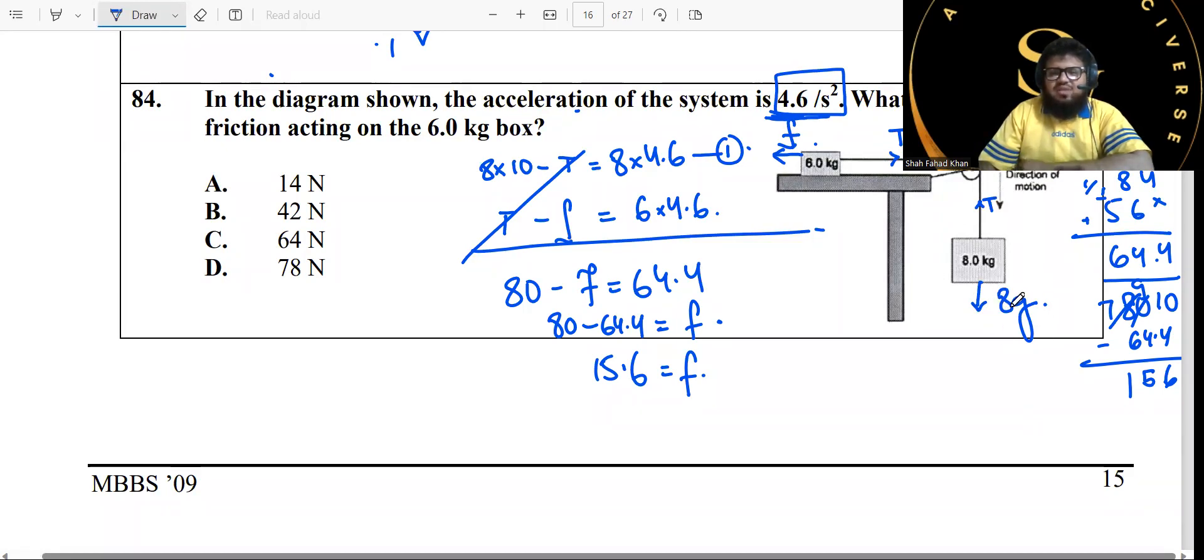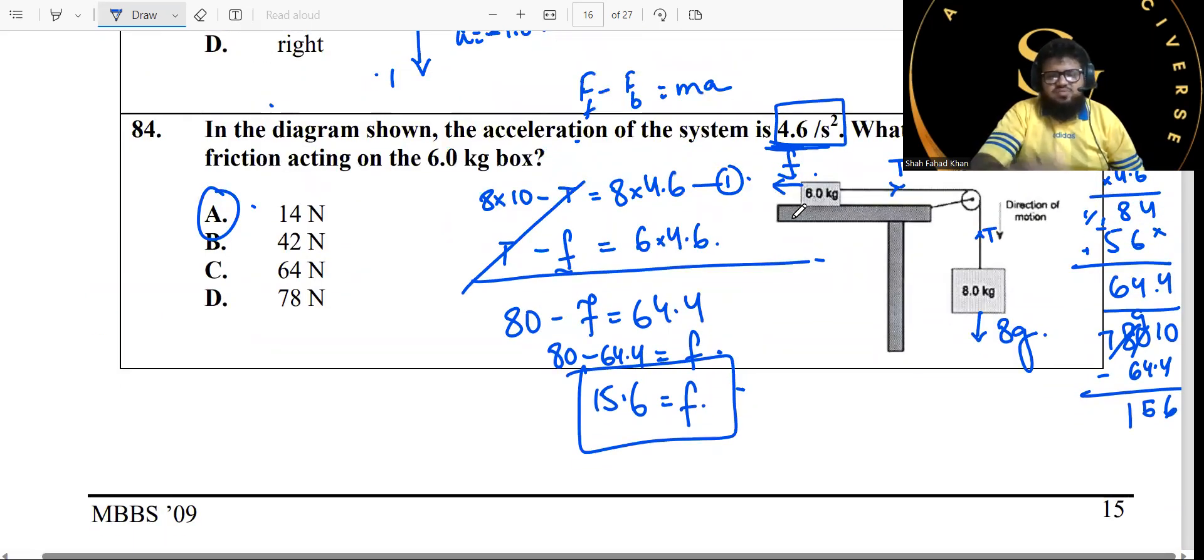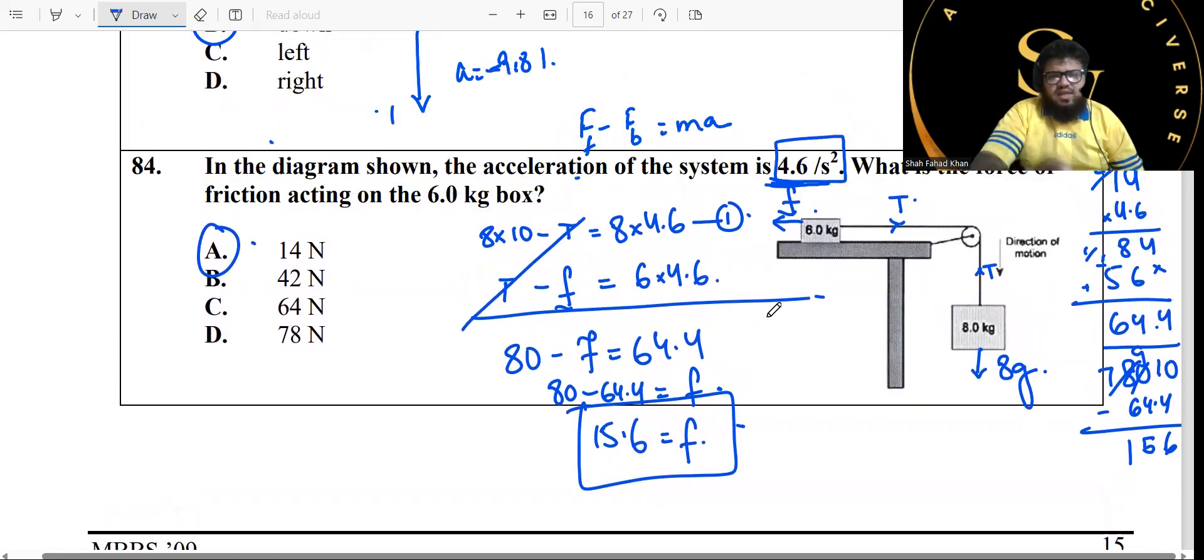Down minus upwards would give you the net force. Forward minus backward, upward, downwards. The forward force is 8g, 8 multiplied by the gravitational field strength, minus the tension will give you ma because forward minus backward force. M is 8 kg and a is 4.6. This is the same thing you can apply to this case. Tension forward, friction backwards. Friction is always against the motion. So tension minus friction will give you ma. M is 6 kg and a is 4.6. Now add the two equations together. T and negative T cancel out. 80 minus f equals 64.4. F value is 15.6, and this 15.6 is actually closest to 14 newton.